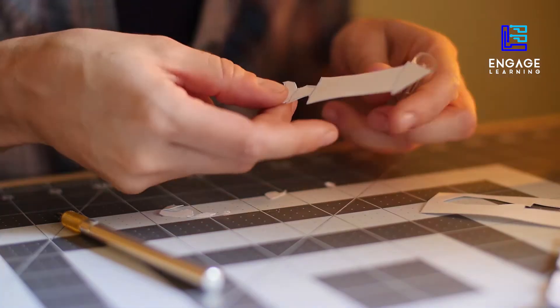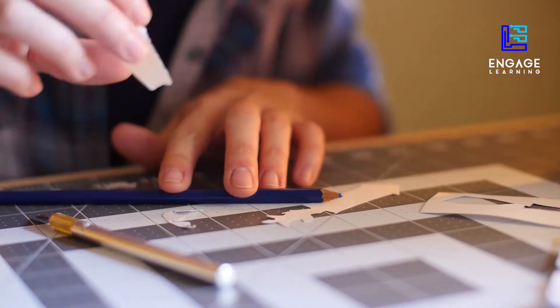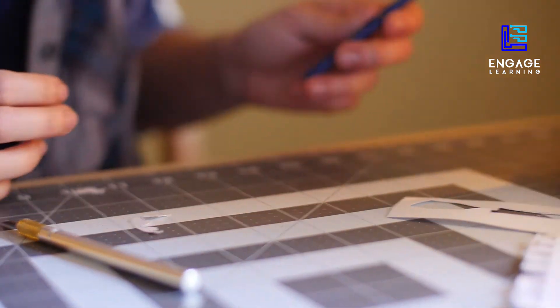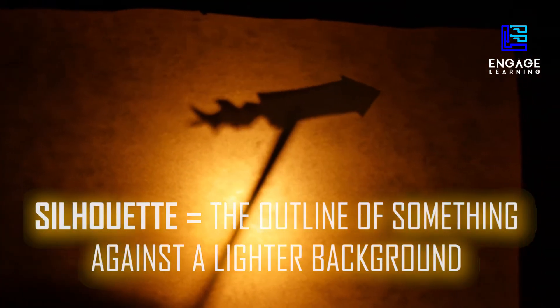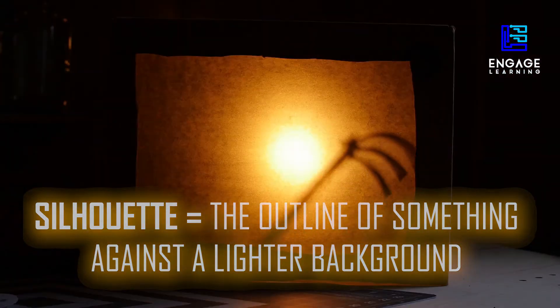Now with our shadow box set up, our puppets will create silhouettes against the screen. A silhouette is the outline of something against a lighter background.